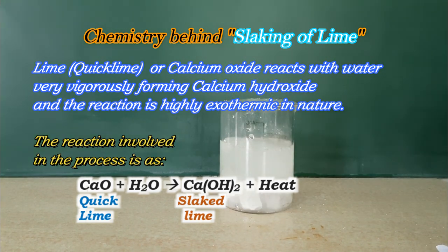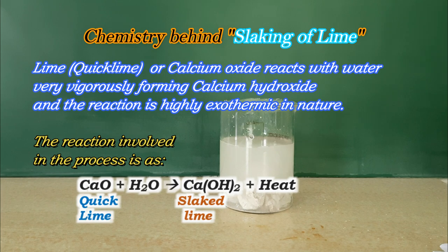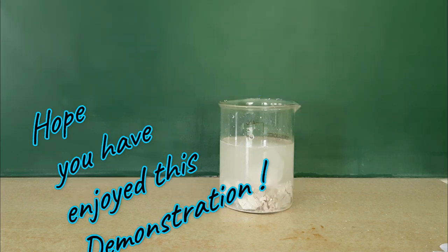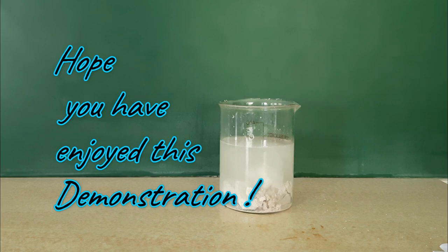Quick lime or calcium oxide reacts with water very vigorously forming calcium hydroxide and the reaction is highly exothermic in nature. The reaction involved in the process is: CaO + H2O → Ca(OH)2 + Heat.